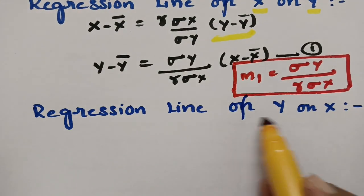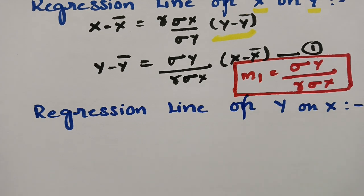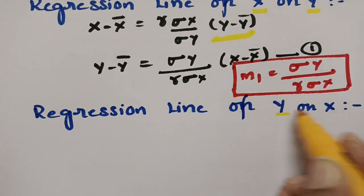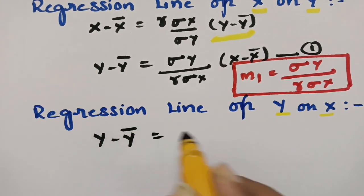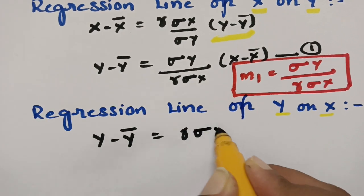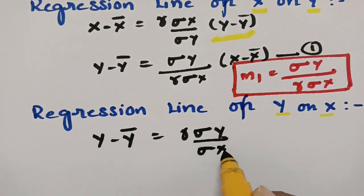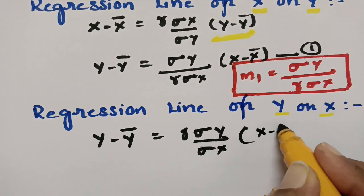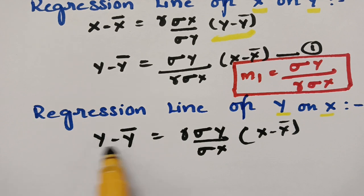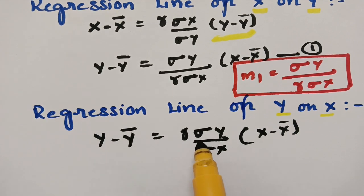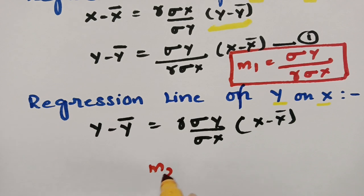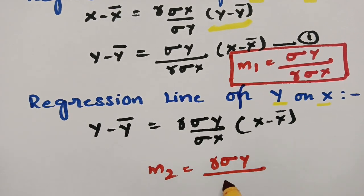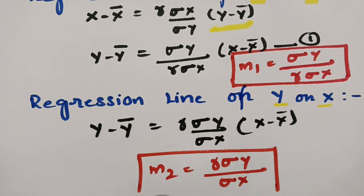The next one is the regression line of y on x. Here it is y on x, so we have to start with y and end up with x. We start with y minus ȳ = r times sigma y over sigma x into x minus x̄. Since it is already in the form y minus y₁ = m(x minus x₁), the slope m₂ = r times sigma y divided by sigma x. We now have both slopes.